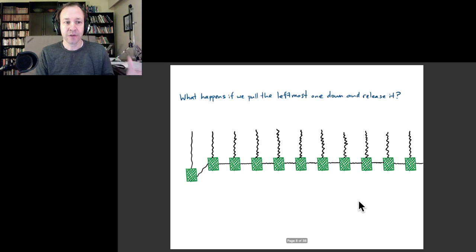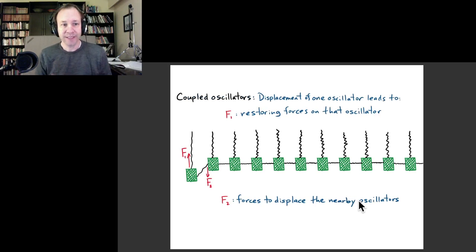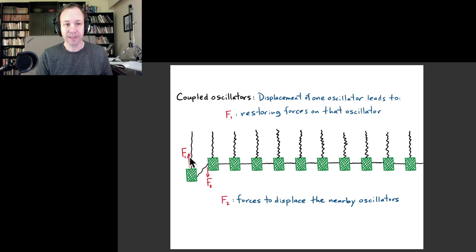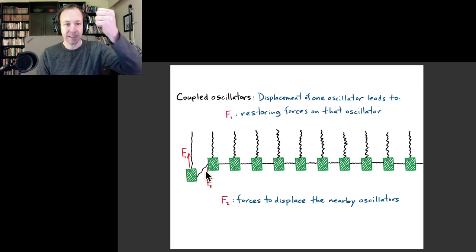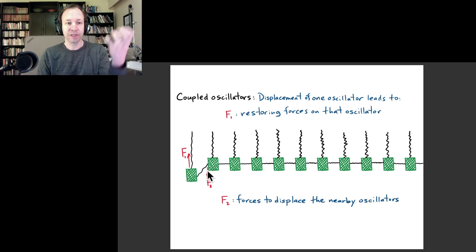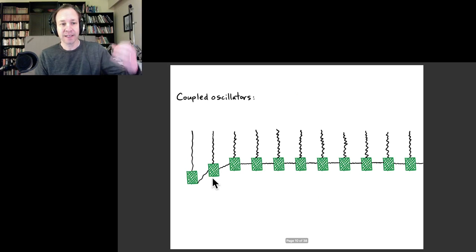I want to think about what happens if I pull the leftmost mass down and then release it — similar to what we did before with the single oscillator where it oscillated up and down. In this case there's still a restoring force on that first oscillator, coming from the original spring and also from the coupling spring which is being stretched. So that first oscillator is going to accelerate upwards, and there's also a force from the first spring pulling on the second mass.